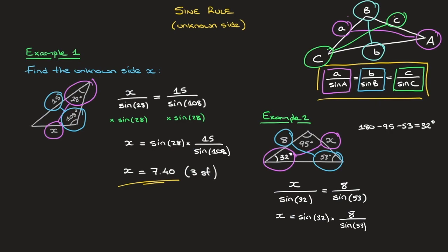And by all means check, but using my calculator, I find that X equals 5.31, where again I've rounded to three significant figures. And there we go. That's how we can use the sine rule for finding an unknown side length in a triangle.